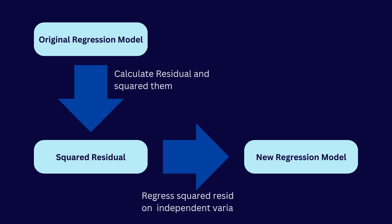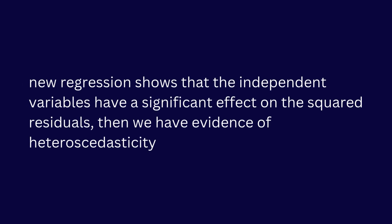Technically, the test uses the residuals of your regression model to create a new regression where the squared residuals are the dependent variable and the original independent variables are the predictors. If this new regression shows that the independent variables have a significant effect on the squared residuals, then we have evidence of heteroskedasticity.